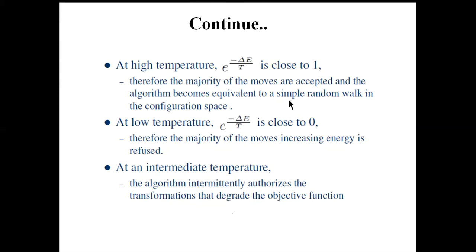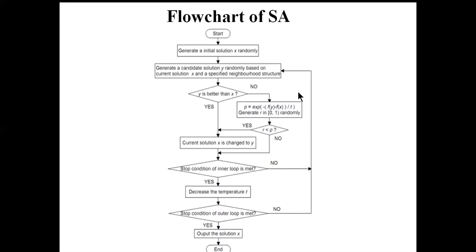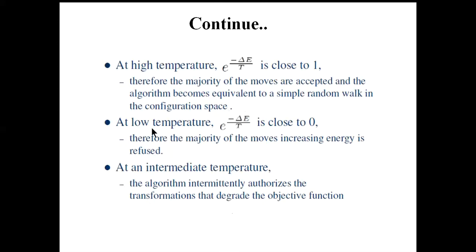At low temperature, when T becomes very small, exp(−ΔE / T) becomes close to zero, so p ≈ 0. If r is, say, 0.3, the condition r < p is not satisfied and we do not accept the worse solution. Therefore at low temperature the majority of moves that increase energy are refused — the algorithm stops accepting worse solutions.